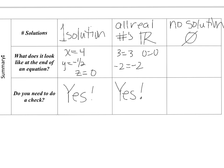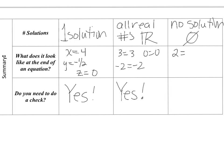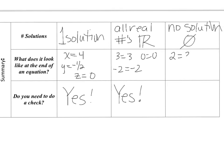If you have no solution, all of your variables cancel out and you're left with a false statement like 2 equals 3, or negative 1 equals 2/3. That's not true — you get a false statement. If no solution is your answer, do you have to check? No. You cannot do a check because there's nothing to check — there is no value for x. Good luck with the rest of this.